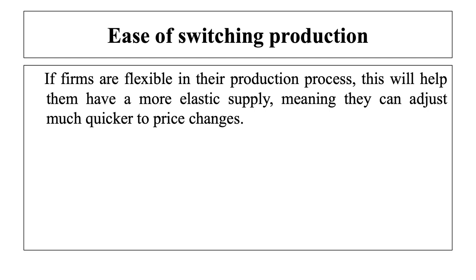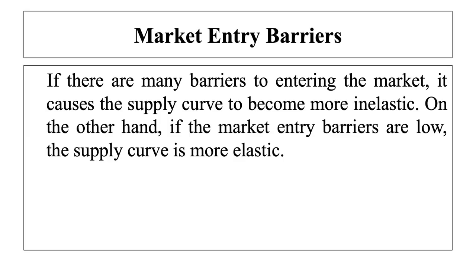The next determinant is ease of switching production. If firms are flexible in their production process, this will help them have a more elastic supply, meaning they can adjust much more quickly to price changes. Next is market entry barriers. If there are many barriers to entering the market, it causes the supply curve to become more inelastic. On the other hand, if market entry barriers are low, the supply curve is more elastic.